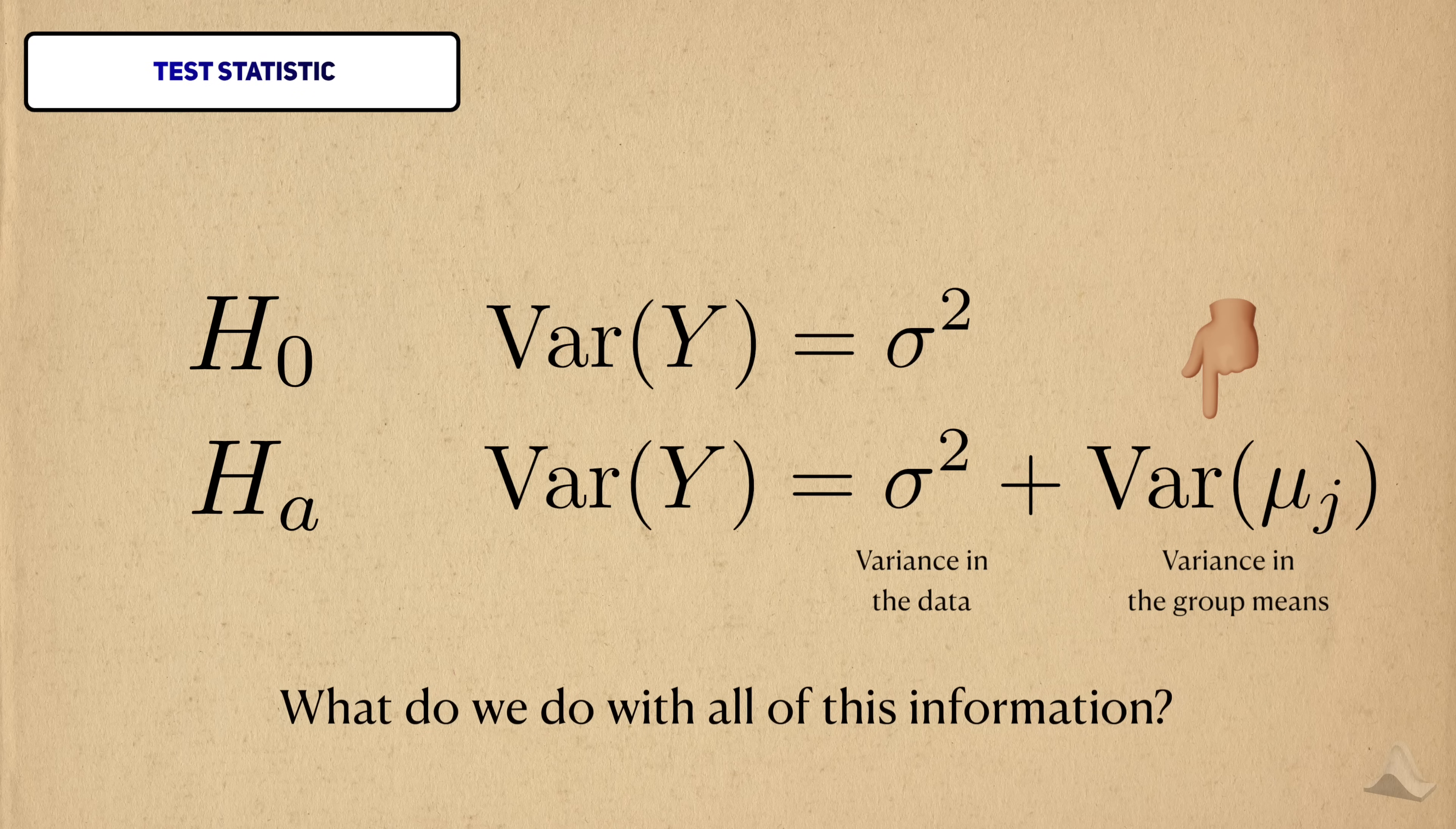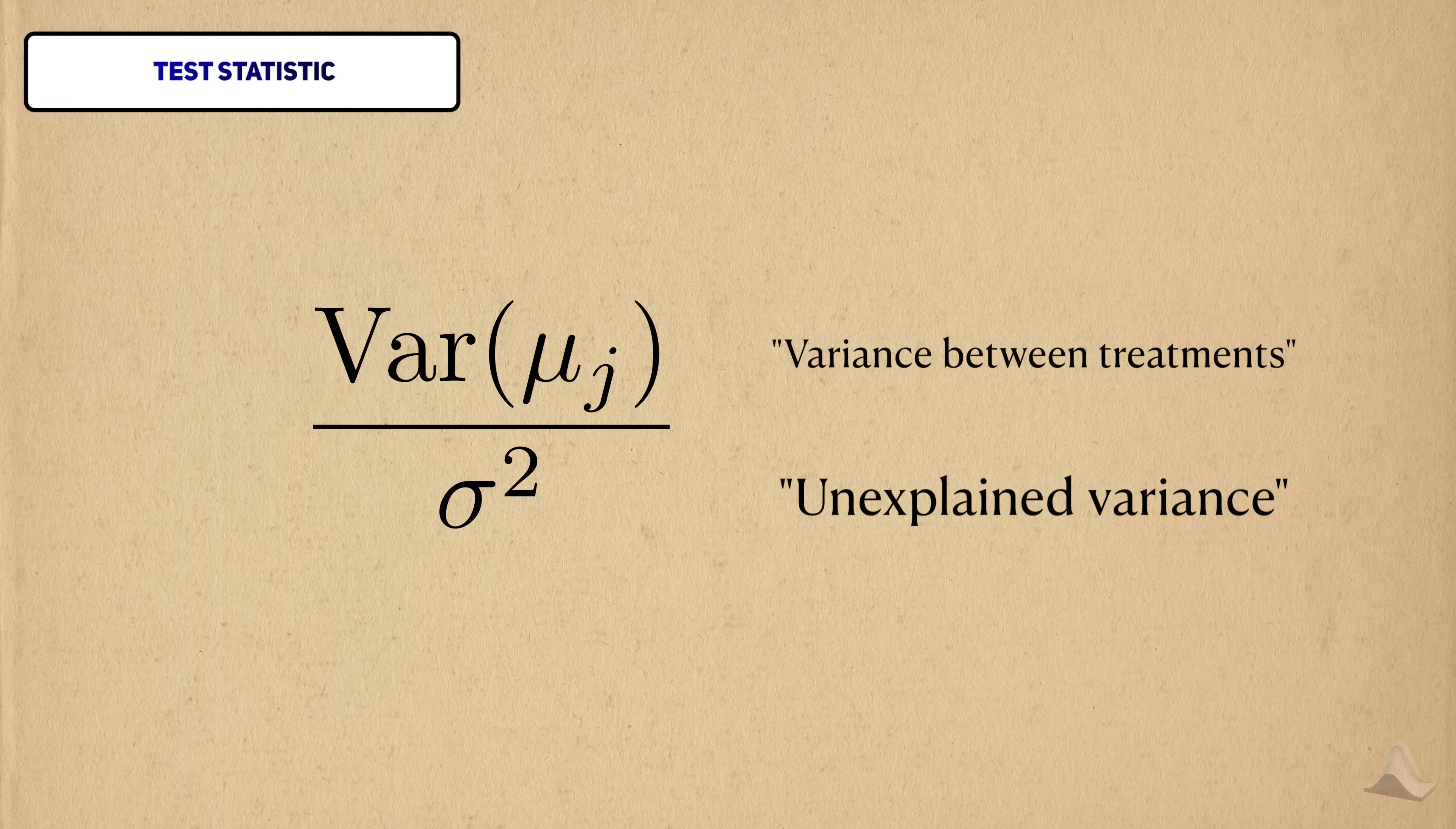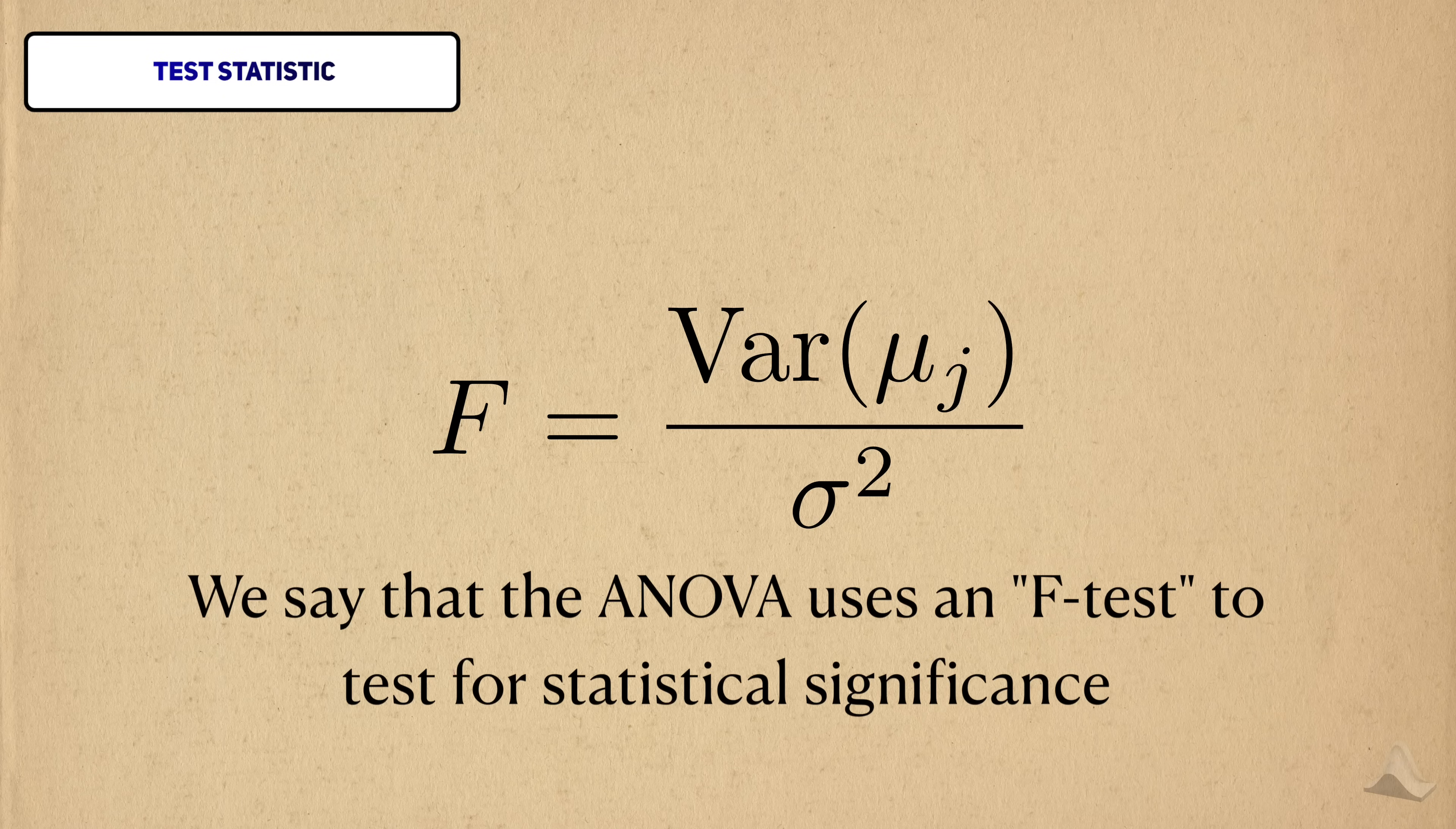So how should we take advantage of this fact when we create a test statistic? Instead of checking this group-wise variance alone, we take the ratio of the group mean variance against the variance of the data. In textbooks, you might hear this phrase as explained variance over unexplained variance, or variance between treatments over variance within a treatment. In essence, we're comparing the two terms that come out of the law of total variance. This is also known as the F-statistic, named after Ronald Fisher. Because of this, we say that the ANOVA uses an F-test to test for statistical significance.